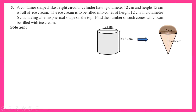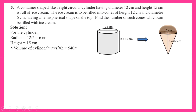For the cylindrical part: the diameter is 12, so the radius is 12 upon 2, that is 6 centimeters. The height of the cylindrical container is 15 centimeters, so h equals 15 centimeters. The volume of the cylinder is pi into r squared into h, that is pi into 6 squared into 15. I don't put the value of pi as it will cancel out later. So the volume comes out to be pi into 6 into 6 into 15, which is 540 pi.